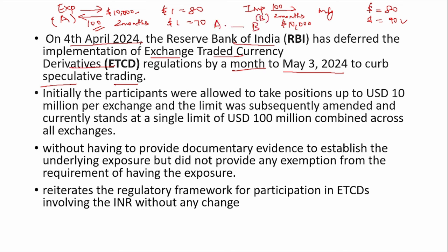A tells that after 2 months, he will receive $10,000 and will give it to B at 80 rupees per dollar. B agrees, because B worries the dollar price might increase to 90 — but by agreeing, B gets it at 80. A was worried it might drop to 70, but he gets it at 80. After 2 months, A gives the $10,000 received from the purchaser abroad to B. A gets 8 lakhs, and B gives the $10,000 to the manufacturer. This is what an Exchange Traded Currency Derivative (ETCD) is.